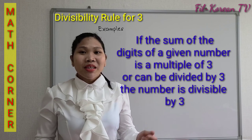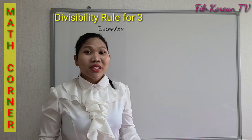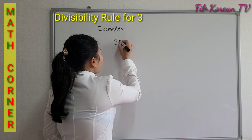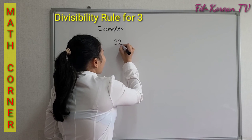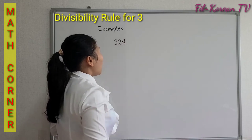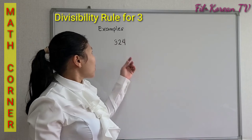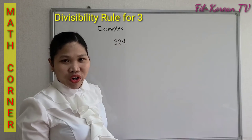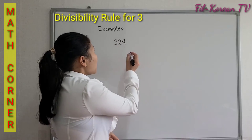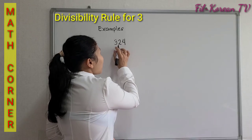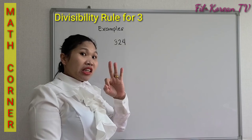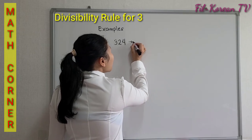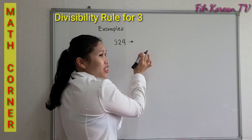Let us examine these examples. This is 324. This number has three digits, and what we are going to do is to add the digits.